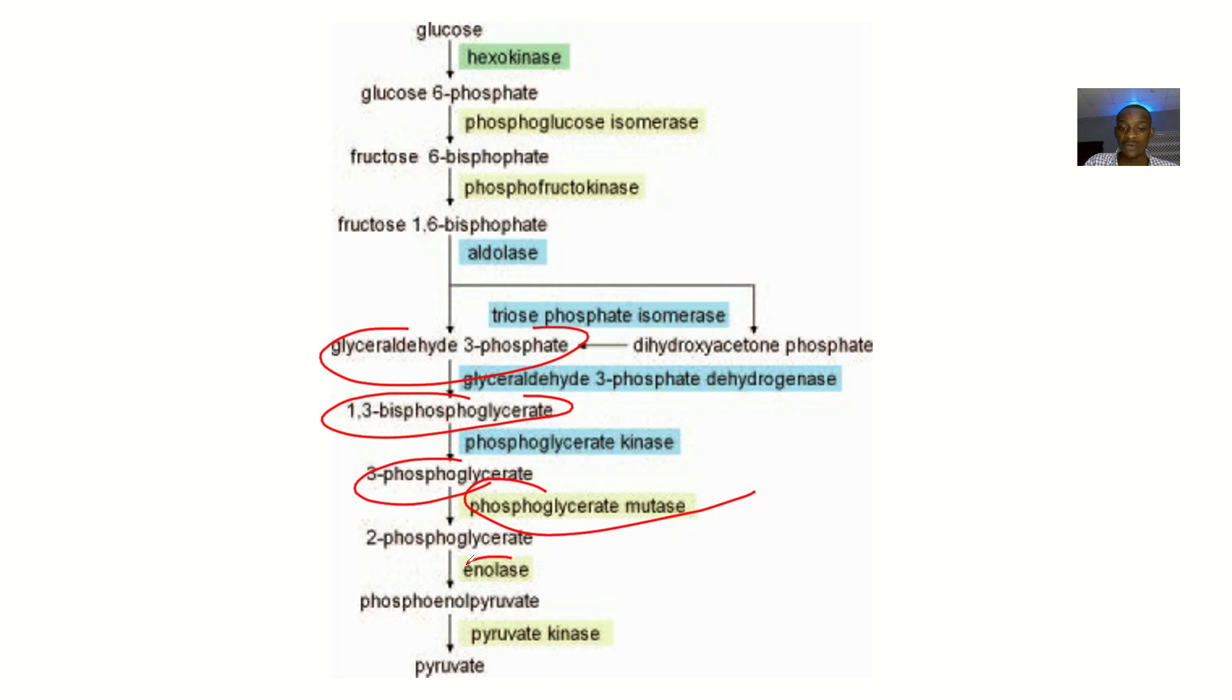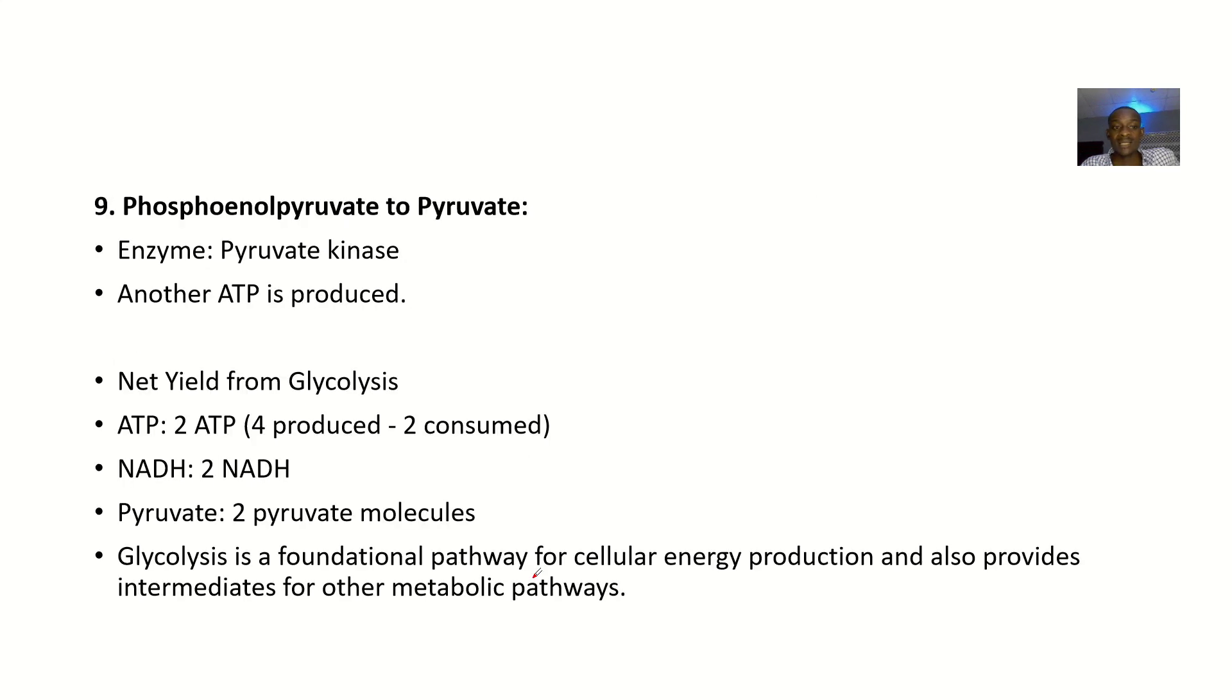2-phosphoglycerate will be converted to phosphoenolpyruvate. The enzyme there is enolase. Lastly, phosphoenolpyruvate will be converted to pyruvate. The enzyme there is pyruvate kinase.